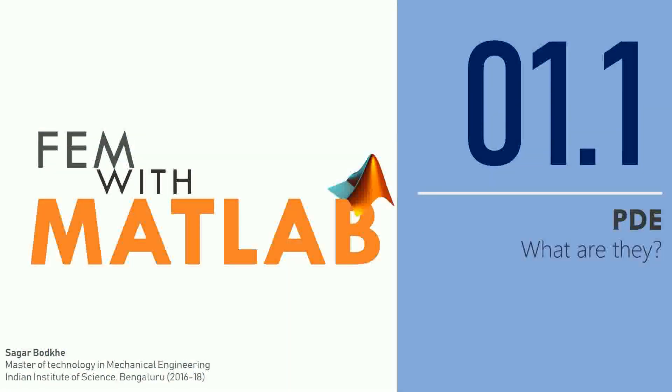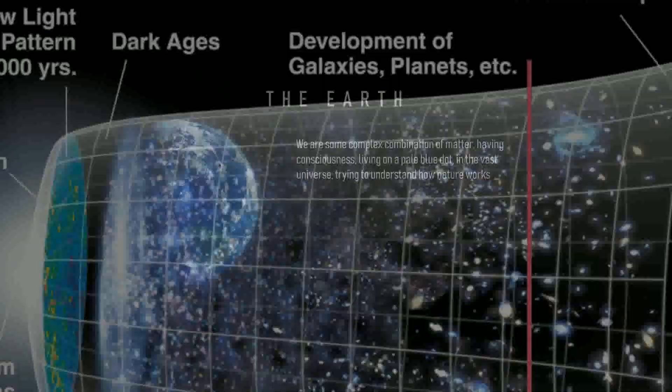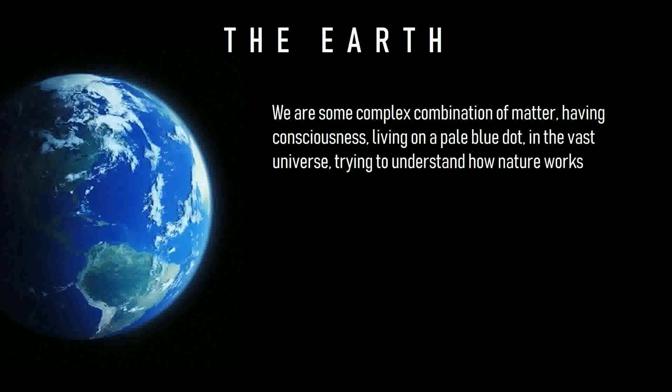In this first video we are going to see what PDEs are. Our universe started to exist 14 billion years ago and this pink line represents the birth of Earth. We are actually pretty new in the universe and this is our home.